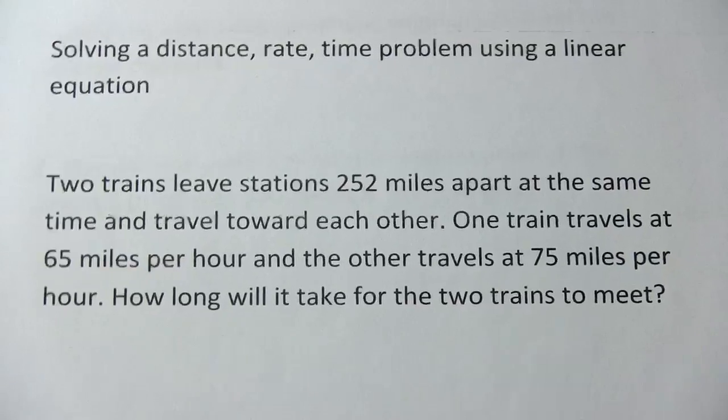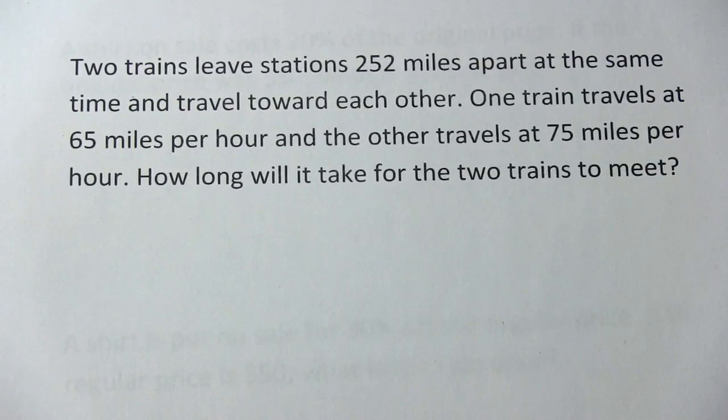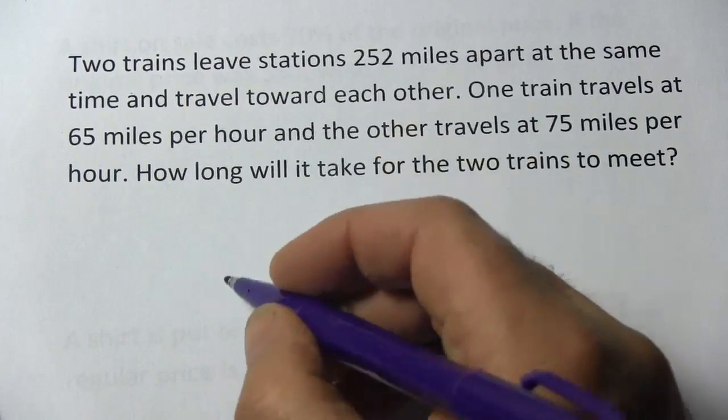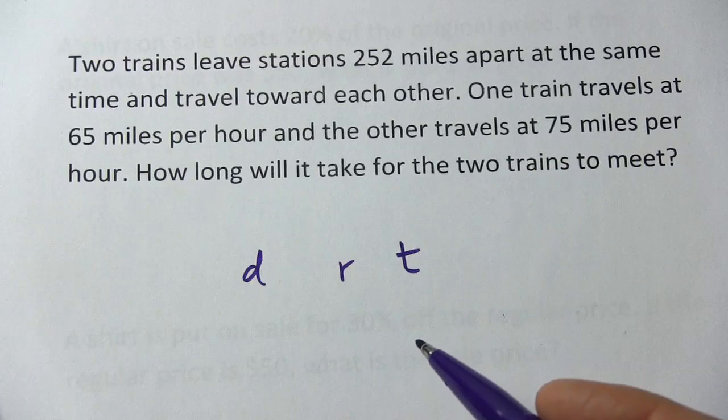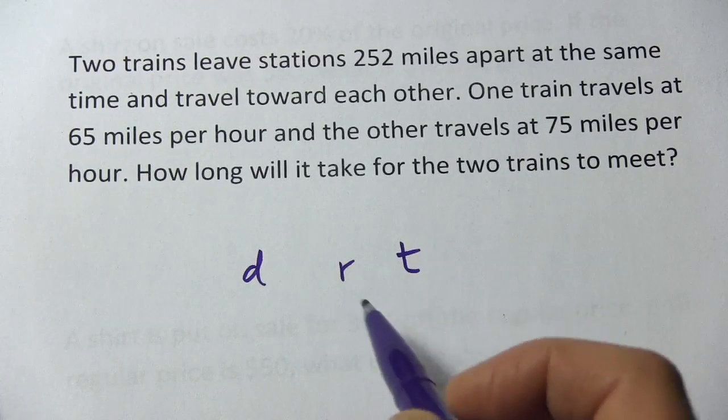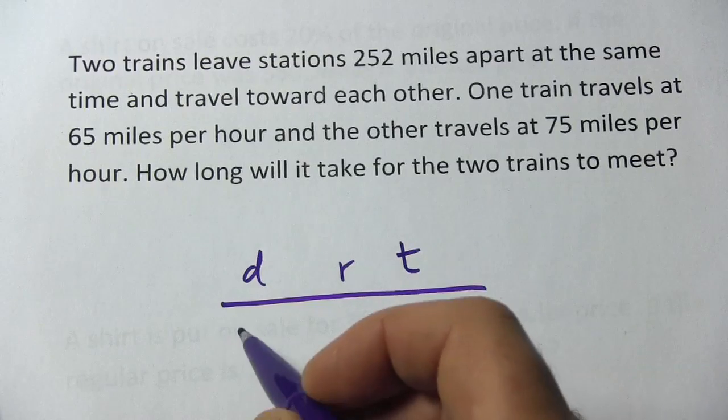This might seem like a really difficult problem. I think the best way when you're dealing with distance, rate, and time, and you've got two different objects, two different trains, is to make a chart and fill in whatever you can.